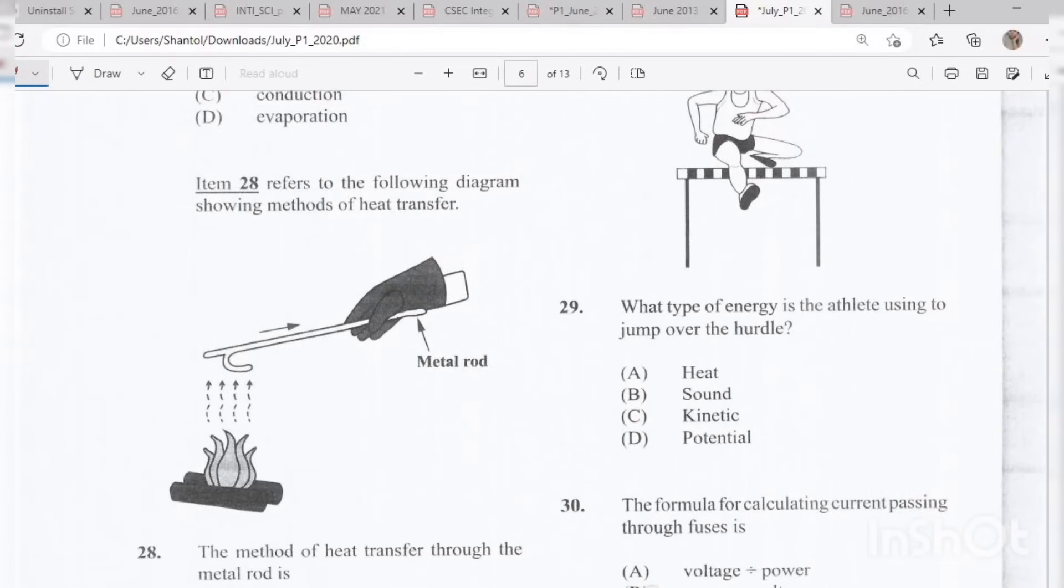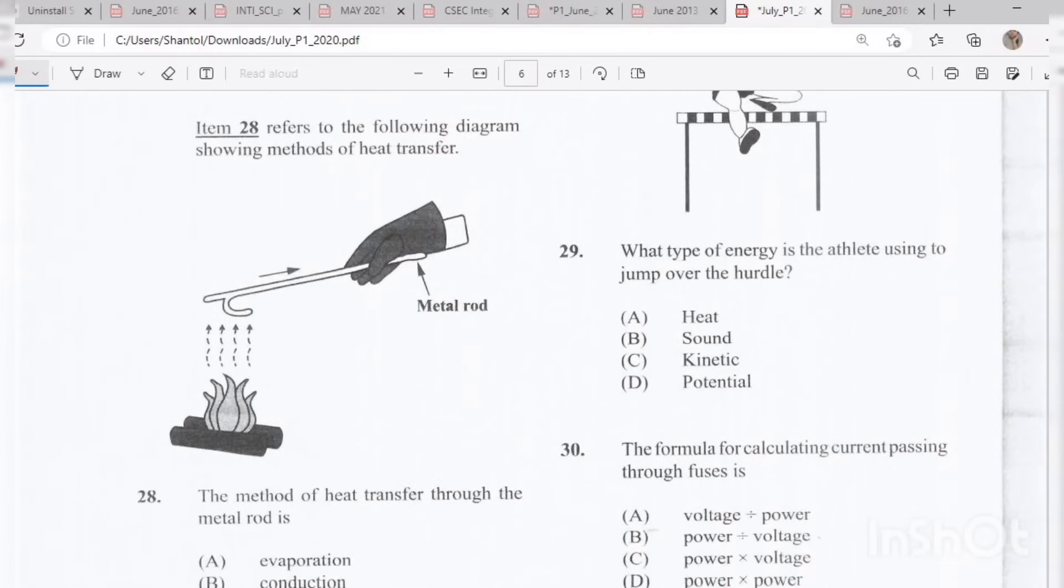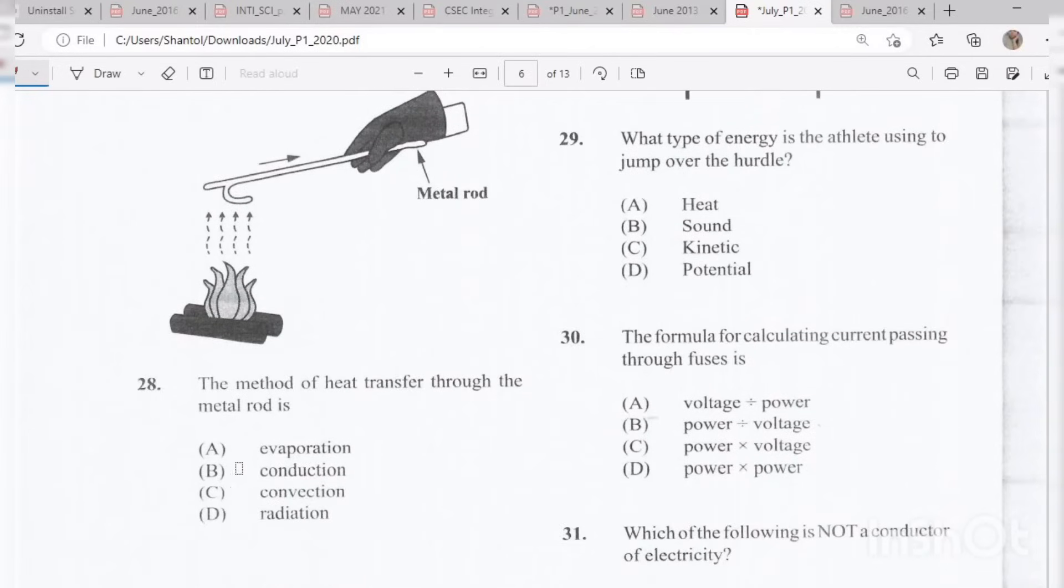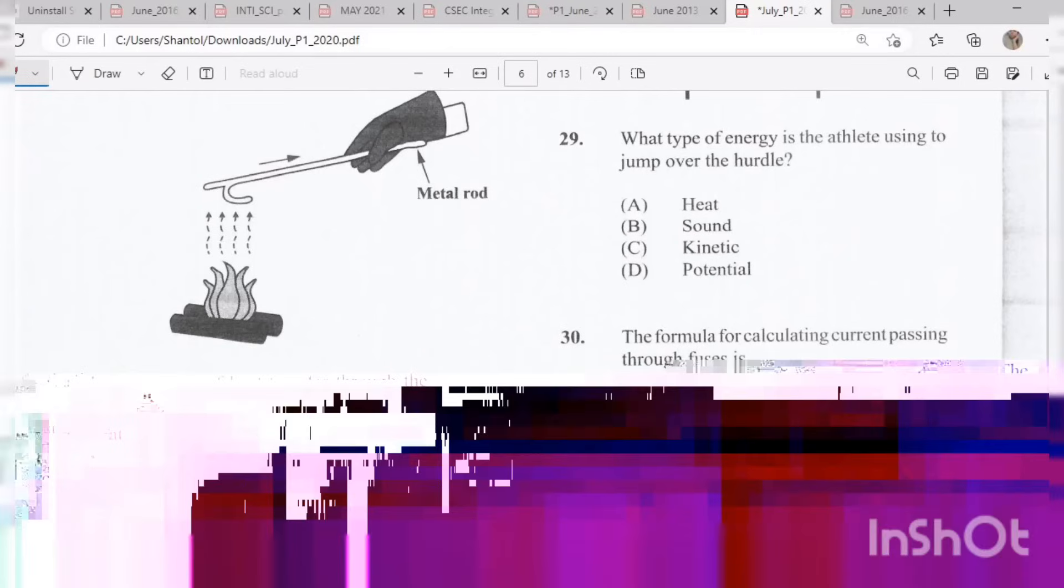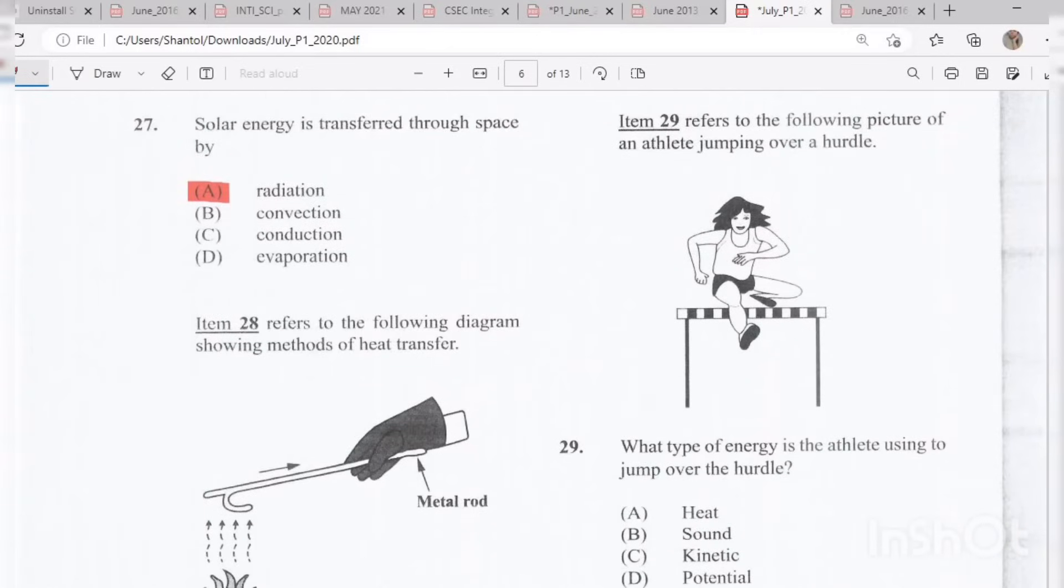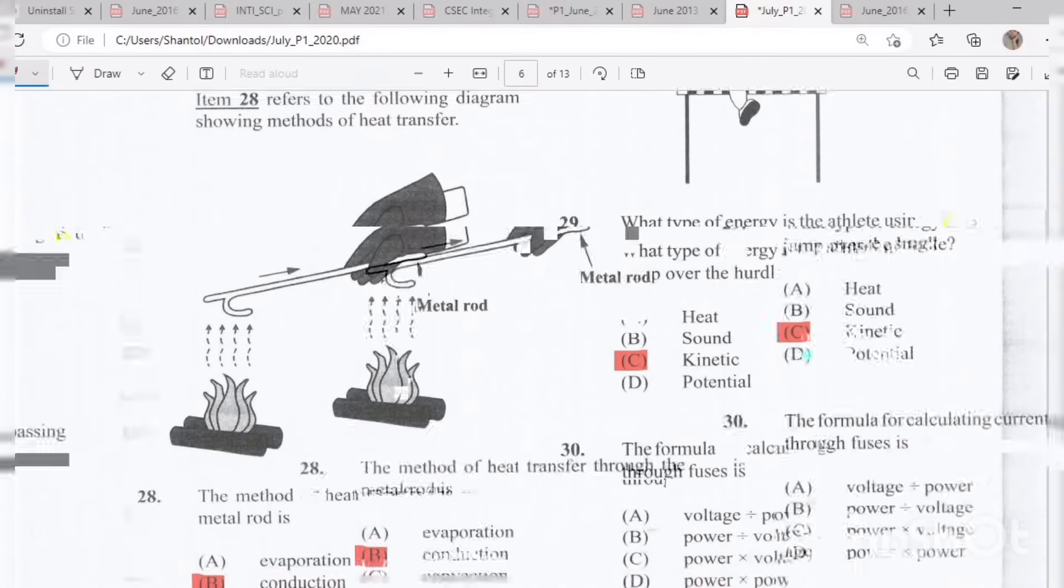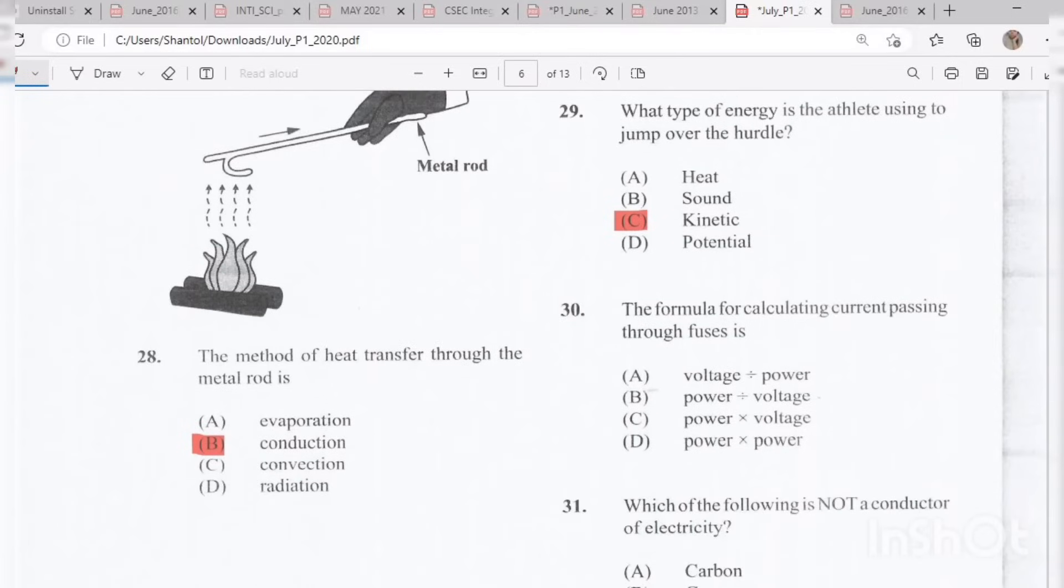Item 28 refers to the following diagram showing methods of heat transfer. The method of heat transfer through the metal rod is B, conduction. If that's your answer, you are correct. Question 29 refers to the following picture of an athlete jumping over a hurdle. What type of energy is the athlete using to jump over the hurdle? The answer is C, kinetic. Remember, kinetic energy is energy in motion. Item 30: The formula for calculating current passing through fuses is B, power divided by voltage.